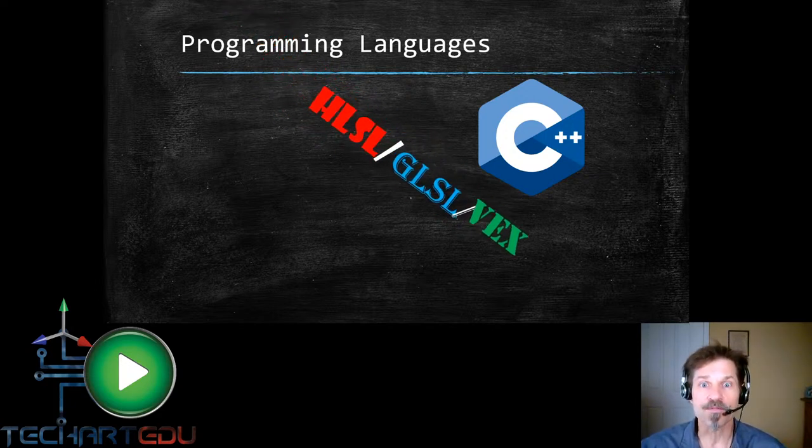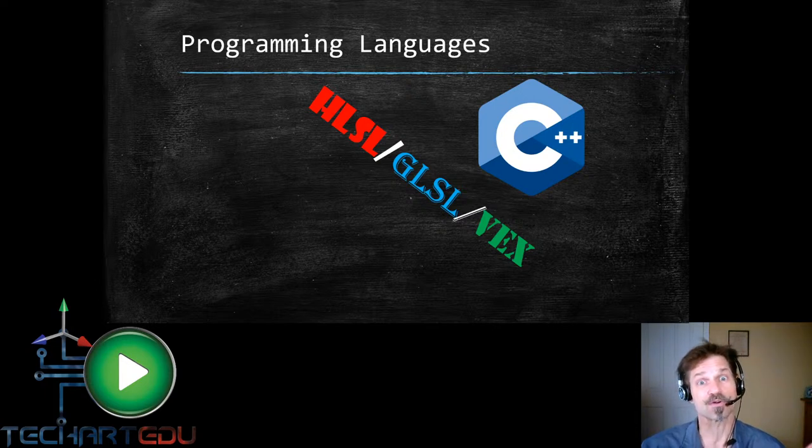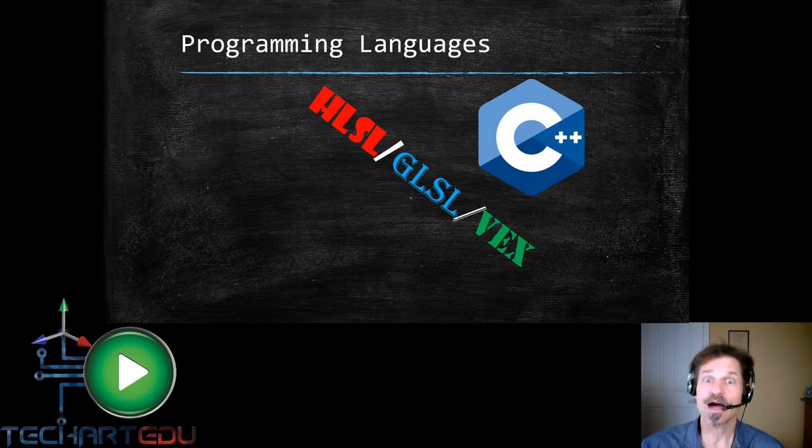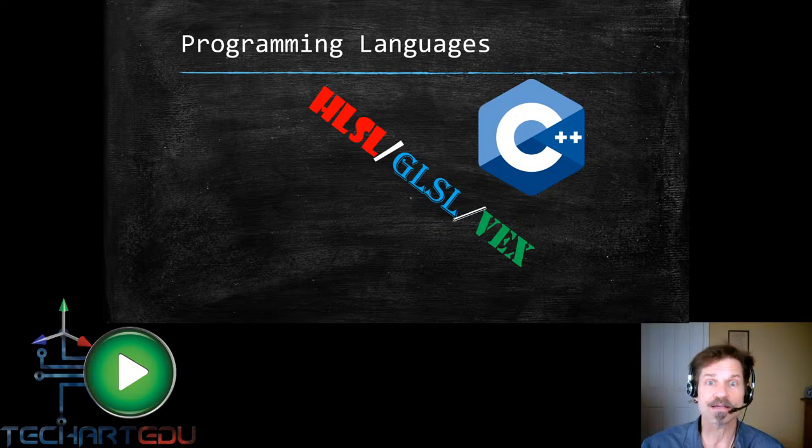Now, a couple of other possible languages you might want to worry about are HLSL, GLSL, and Vax. Okay, these are basic shading languages. Now, these are pretty much specific to shading languages. However, in the new UE4 version, they're going to be exposing expressions. And within the expressions, you can type in custom HSL. So HSL is now basically being used as an expression language, which is actually pretty cool because it's pretty powerful.